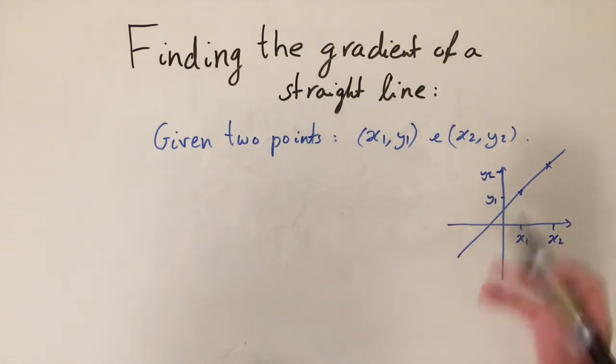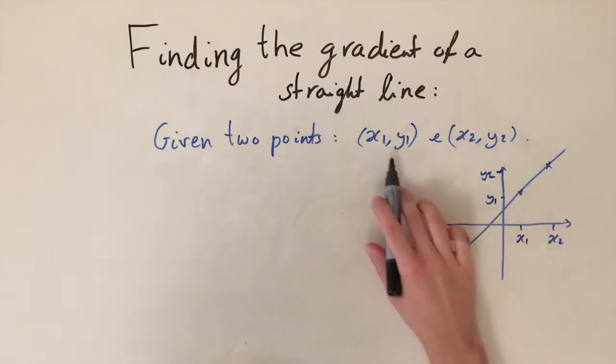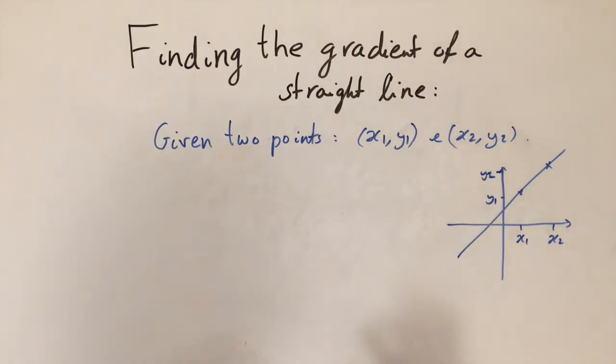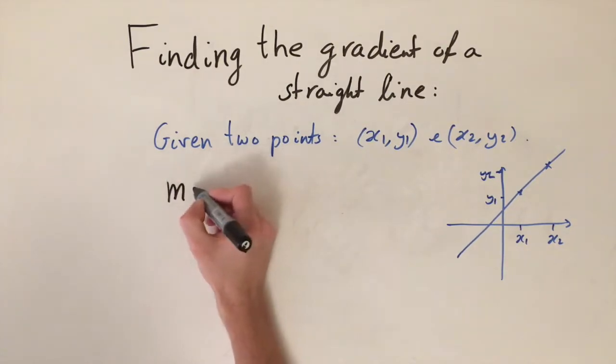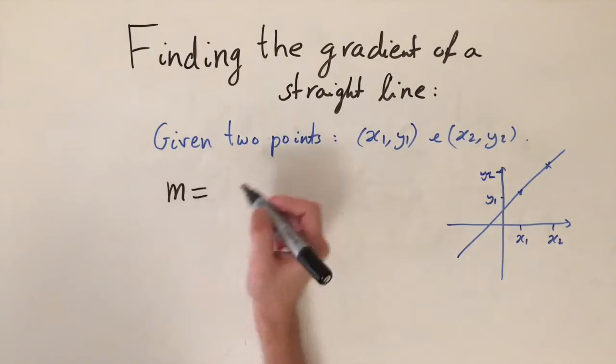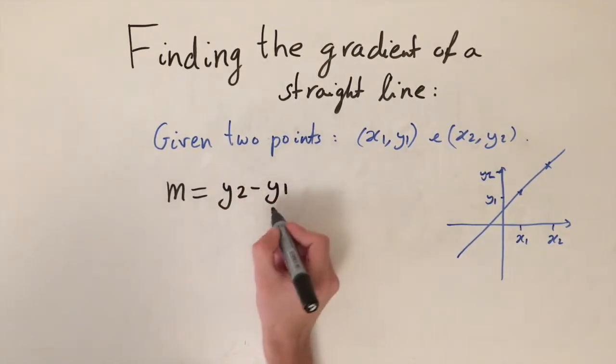So we don't actually know what the equation is, but we do know the values of two different points. Luckily there is a formula for this. The formula goes like this: we have M is the gradient, this is what we want to try and find out, and the gradient is given by y2 minus y1 divided by x2 minus x1.